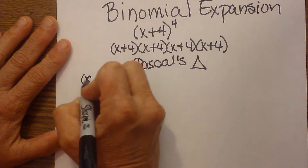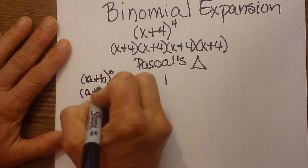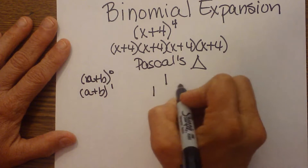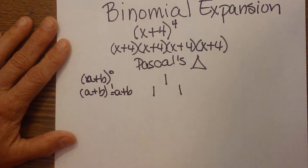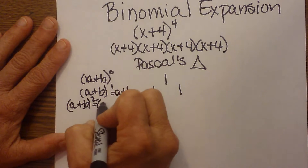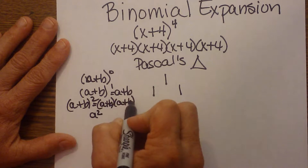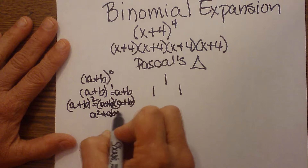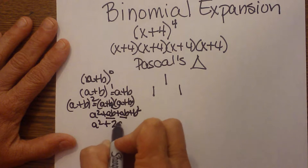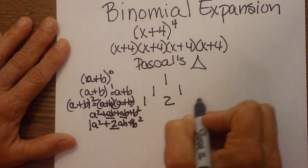If I have a binomial, we'll just call that a plus b, raised to the zero power — anything to the zero power is one. If I raise it to the first power, that's just a plus b, so the coefficients are one and one. If I raise it to the second power, I take a plus b times a plus b and FOIL it: a squared, plus ab, plus ab, plus b squared — which gives a squared plus 2ab plus b squared. So my coefficients are one, two, and one.